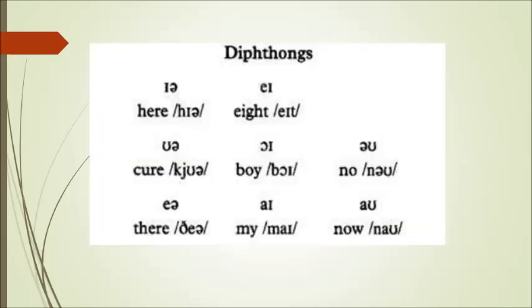And now we have the combination of two vowel sounds, that's what we call diphthongs. So we have: A, Cure, Boy, Know, The, My, Now.